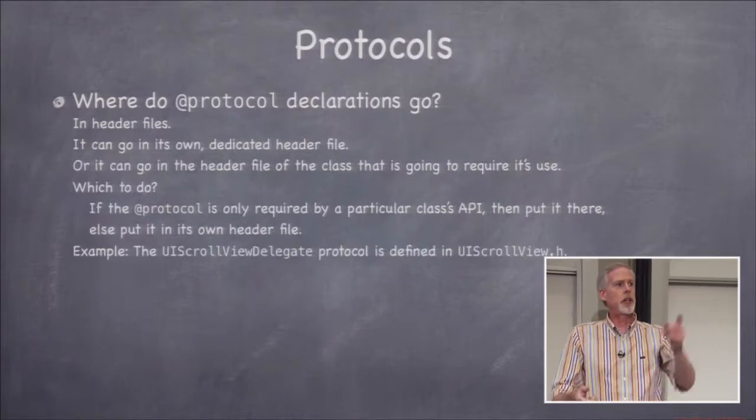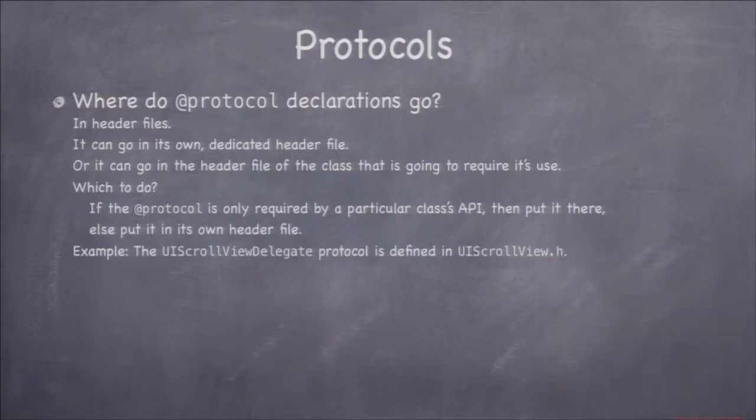In Java, all classes automatically inherit from Object, but that's not true in Objective-C. You could have a class with no superclass, inheriting no methods from anywhere — but in iOS we always inherit from NSObject because we want introspection and all those things. It's by convention rather than enforcement by the compiler. Protocol declarations go in header files — they can go in their own header file, or in the header of some related class.